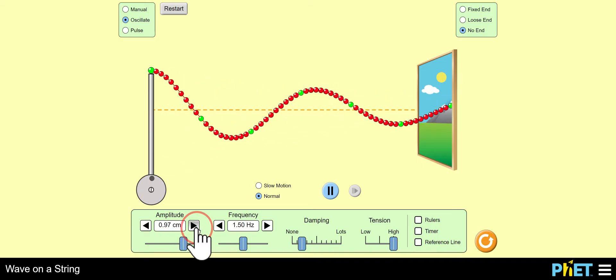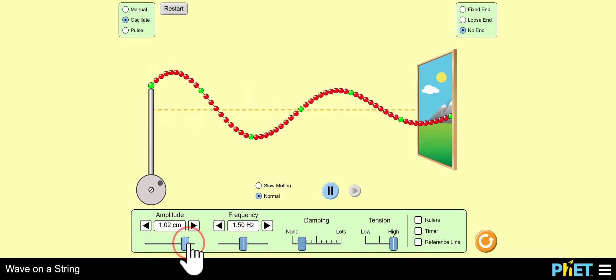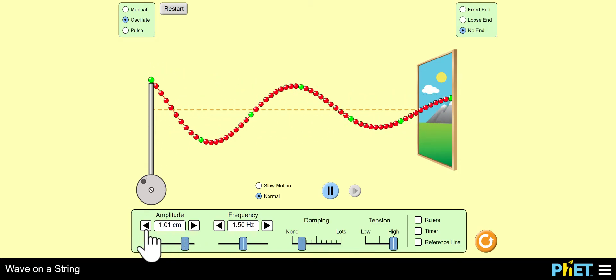Okay, so you can click it this way. You can use the slider for amplitude. There you go.